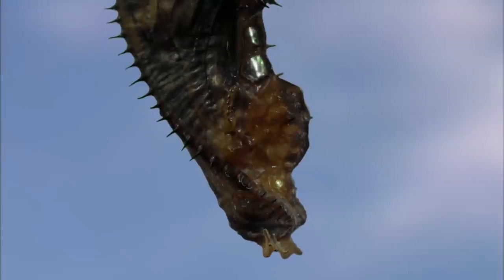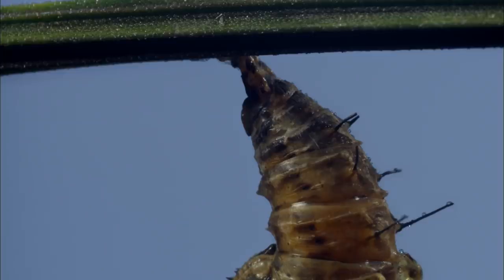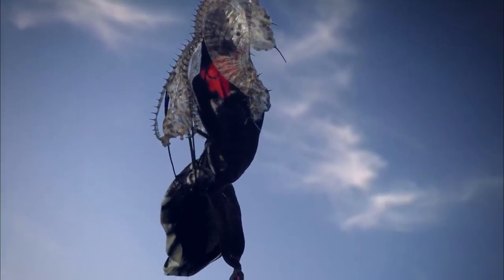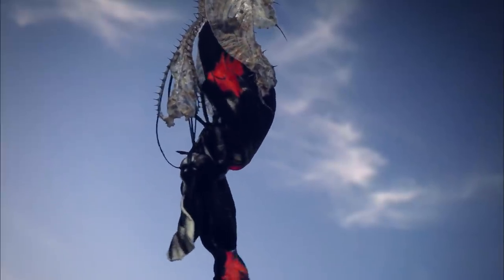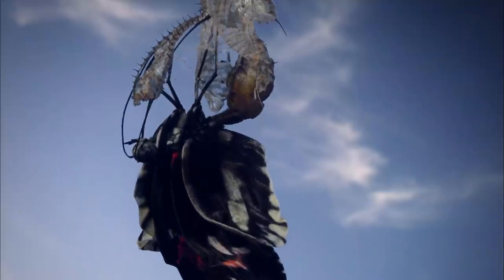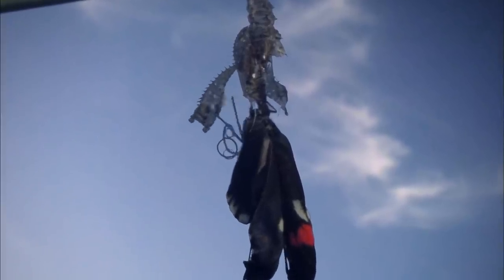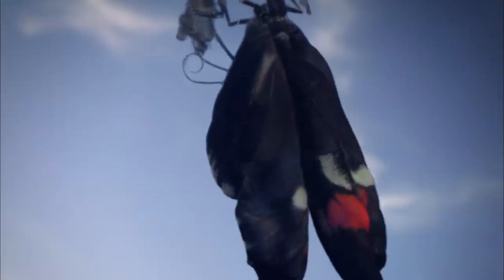An adult heliconius butterfly emerges after eight days of transformation. Its delicate wings are crumpled and wet. It stretches them by pumping blood along their veins and then waits for them to dry before attempting to fly.